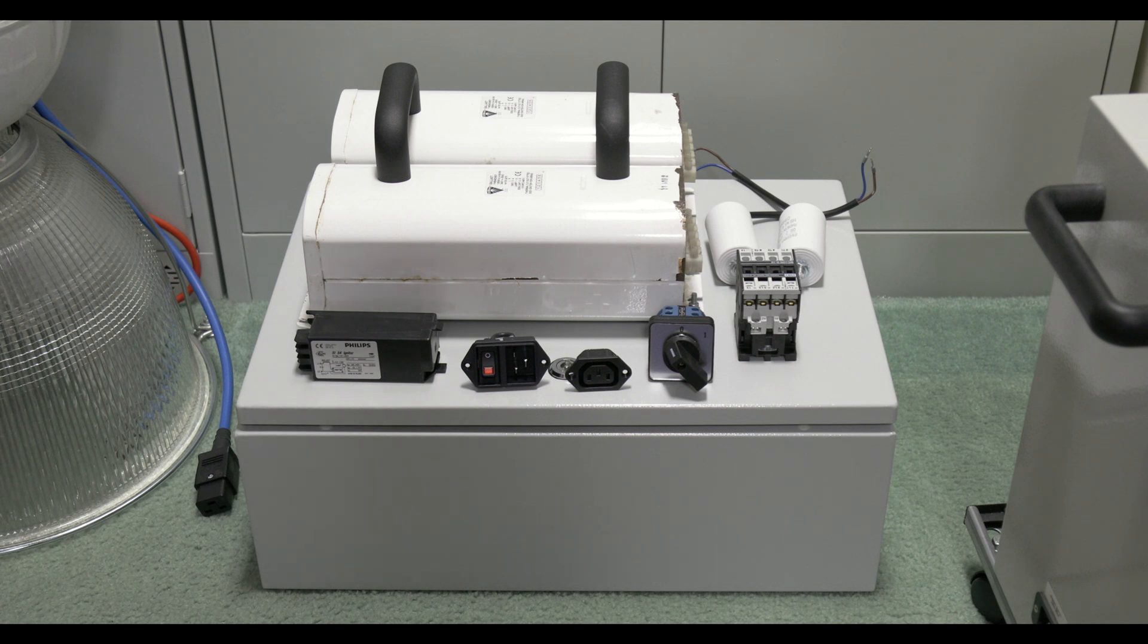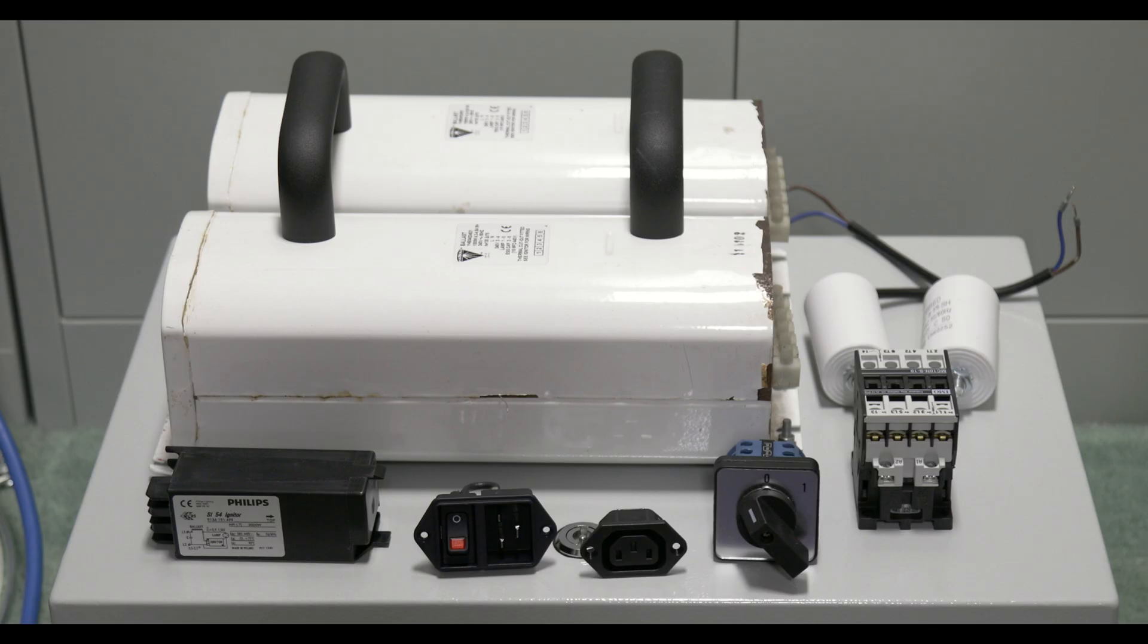One thing to note is that the reason why I'm having two selectable so I can run them in parallel is because it literally is just a high voltage step-up transformer followed by an ordinary high voltage choke. So by running them in parallel, I can run 2,000 watt metal halide lamps.